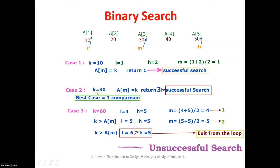In Case 2, the key value is 30. Now 30 is compared with a[3], that is a[m] — it matches. It will return 3. Only one comparison is being made. This is the example for the best case.